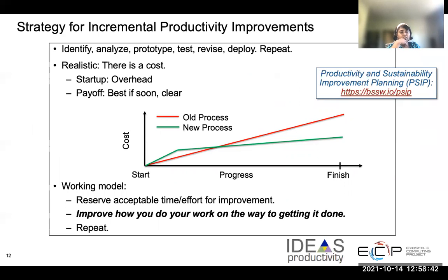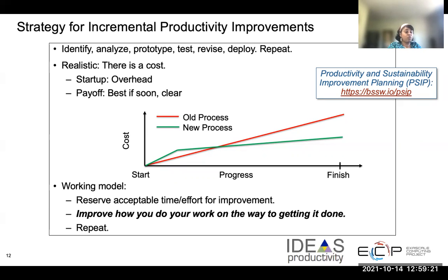Let's talk a bit about process improvement. When you want to improve a process, there's a cost to adding any process — there's always going to be some overhead associated with getting started. One hopes that there is a big payoff after the initial higher cost, and that the ongoing cost will be less and will benefit the team over time. The slide shows a graph with a green line going up ahead representing the startup cost, and eventually the payoff ensures that the new process will cost less than the old process.